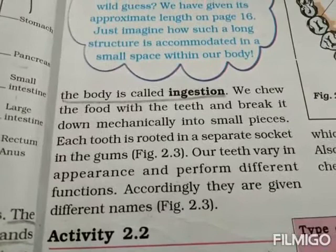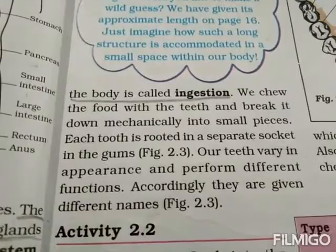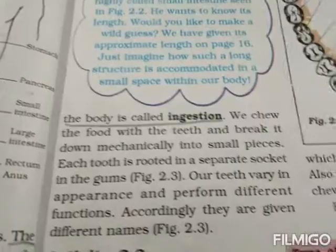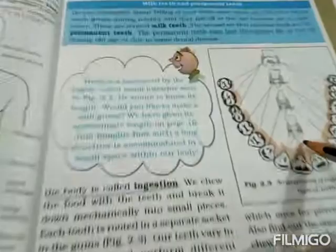Each tooth is rooted in a separate socket in the gums. Our teeth vary in appearance and perform different functions; accordingly they are given different names. There is a diagram of the teeth showing the arrangement in the jaw. Now — milk teeth and permanent teeth.